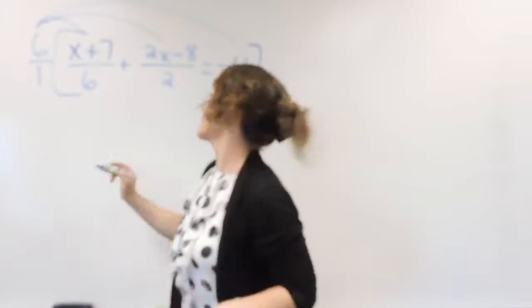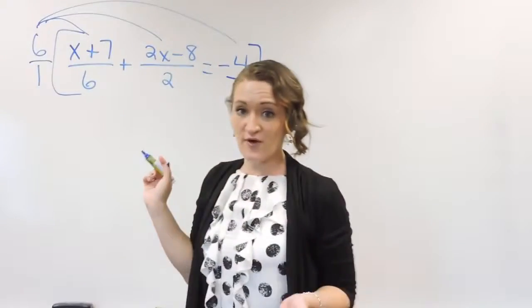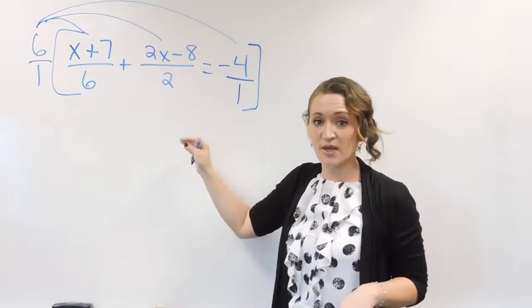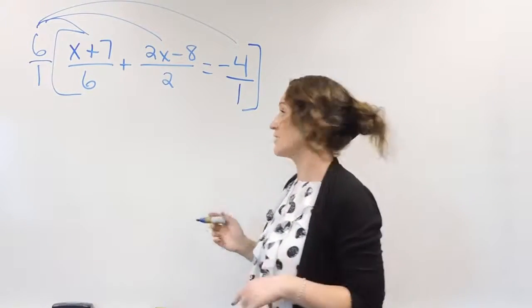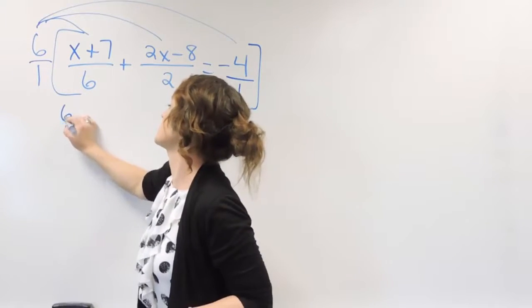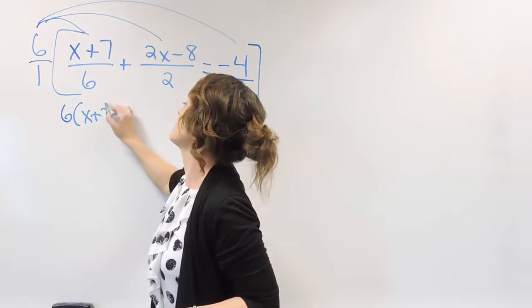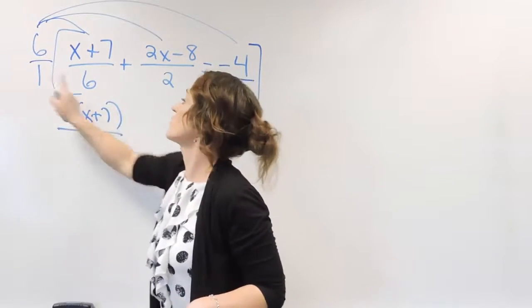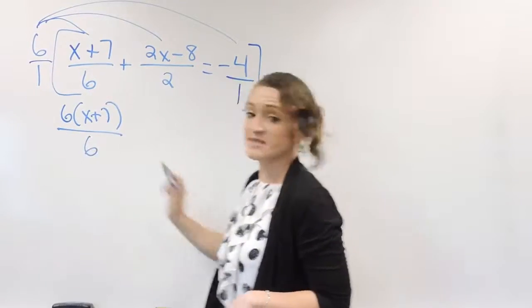So the way that this is going to work here, when we multiply fractions, it's numerator times numerator, denominator times denominator. Alright, so we're looking here, our first multiplication is 6 times the x plus 7 over 1 times the 6, which is 6.